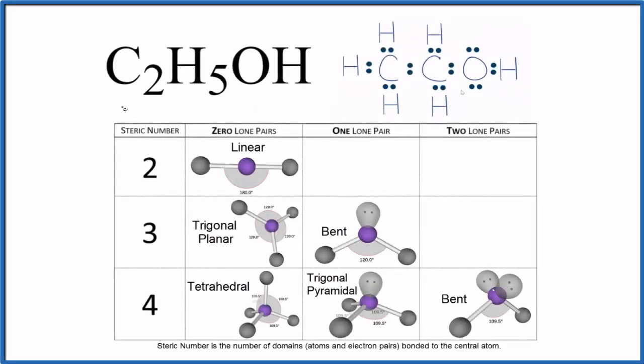Let's take a look at the molecular geometry for C2H5OH. This is ethanol, also called ethyl alcohol. So we'll use this table here and then we'll also look at the AXE notation to figure out the molecular geometry.